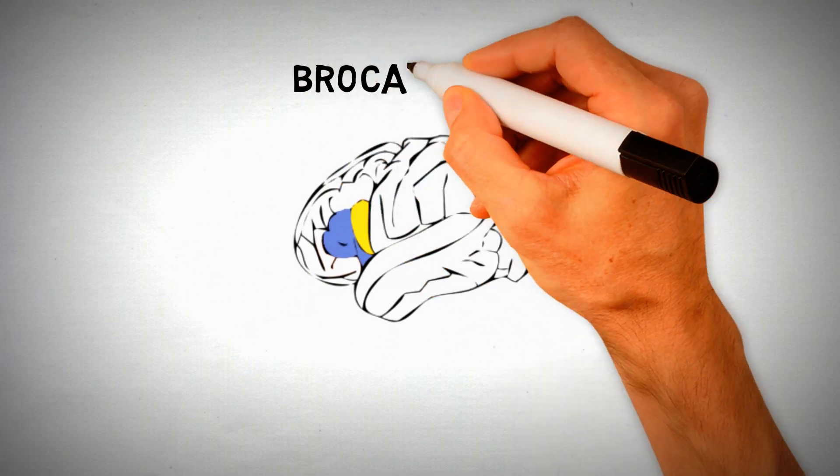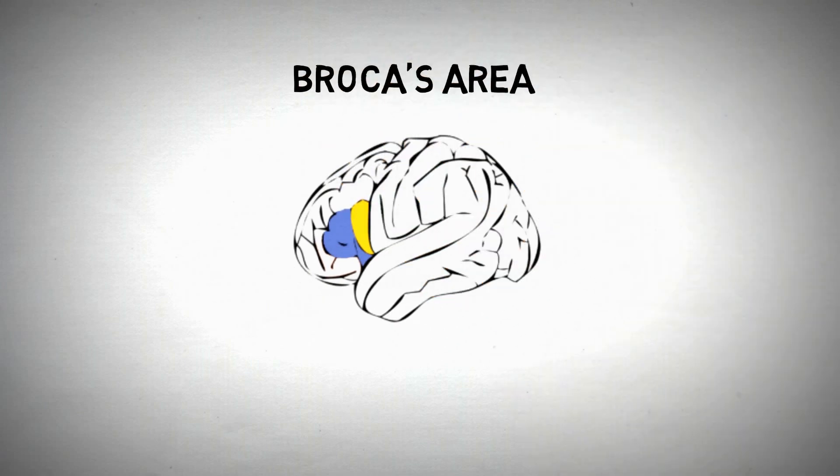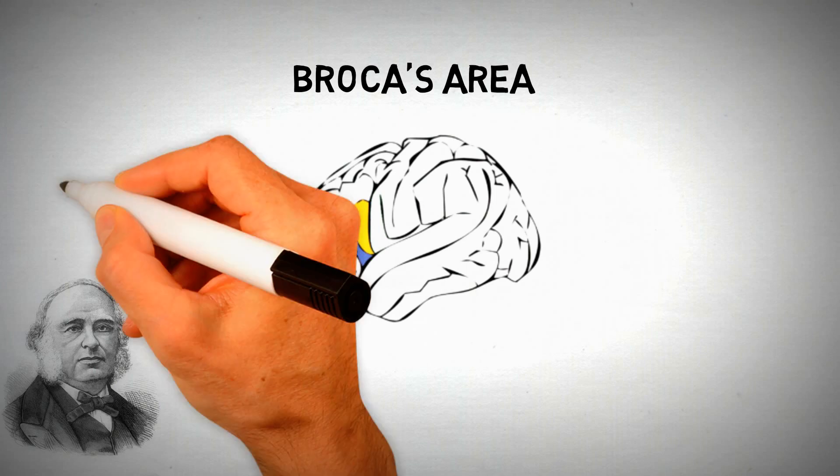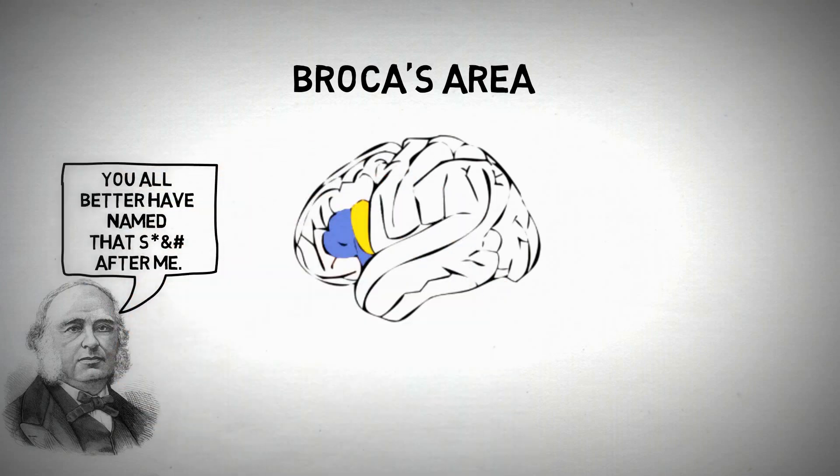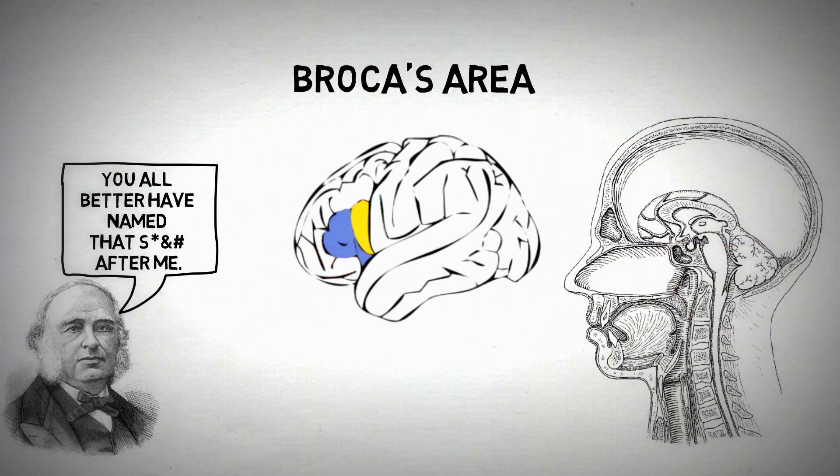This is called Broca's area, and you guessed it, it's named after the scientist who discovered the link between speech and that part of the brain. And as we use Broca's area, simultaneously we are using the same muscles in our throat that we use just before we make sound come out of our mouths, the larynx. Wonder where that word came from? Well, look it up cause I have no idea.